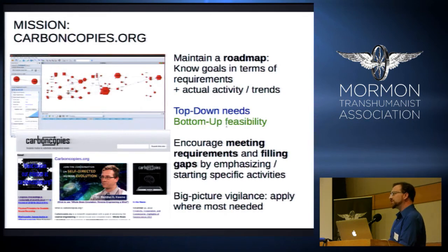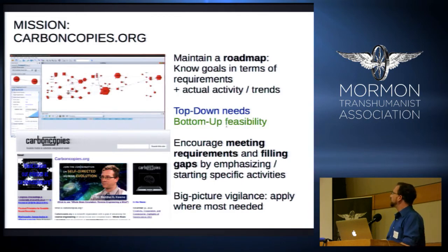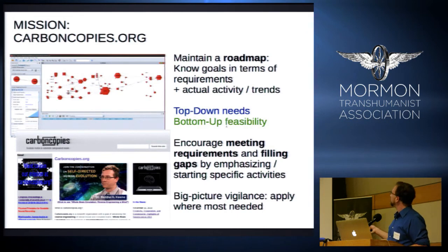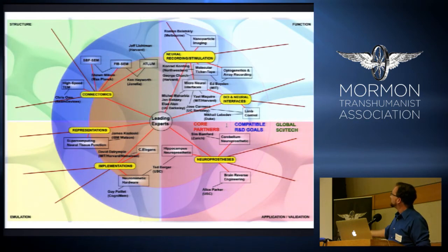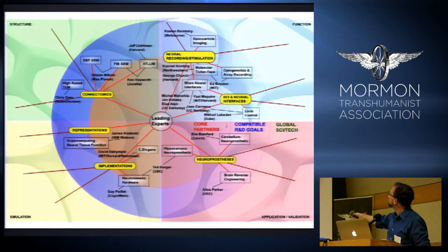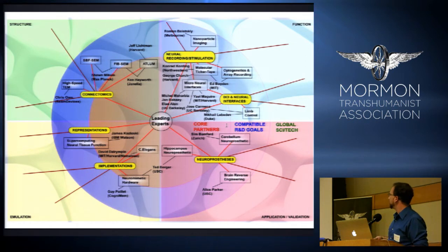An approach I've been using — and I created an organization called carboncopies.org around this — is that I've been maintaining for several years a roadmap of all these problems, possible solutions, and what's going on in various labs. From that I tried to look at what the trends are, looking at both top-down needs in terms of breaking down the problem and bottom-up feasibility, and I've tried to encourage activities that should be done. It's a big-picture vigilance. This has led, in these four pillars of structure, function, emulation, and application, to finding how different labs doing different techniques can best work together, actually talking to them all and seeing results from that.